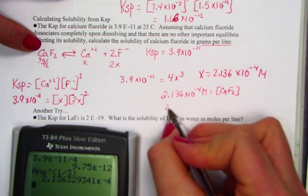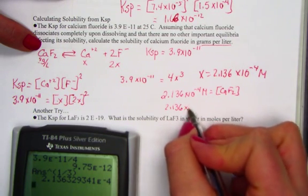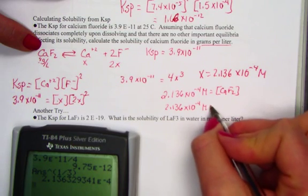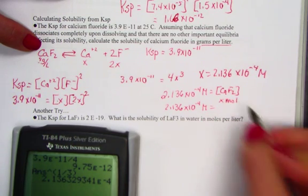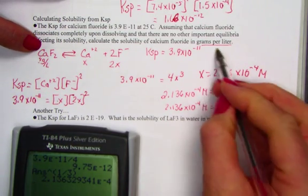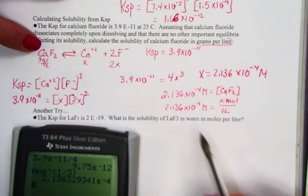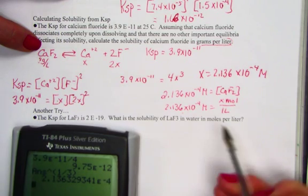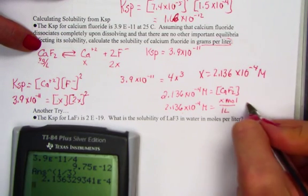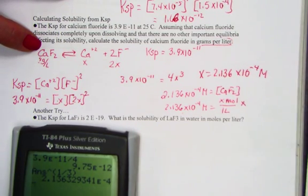So if we know 2.136 times 10 to the negative 4th molarity is equal to x moles per liter, and that's really what we're trying to solve for is per liter. This value is also the number of moles, and moles times molar mass will pull out the number of grams per liter.